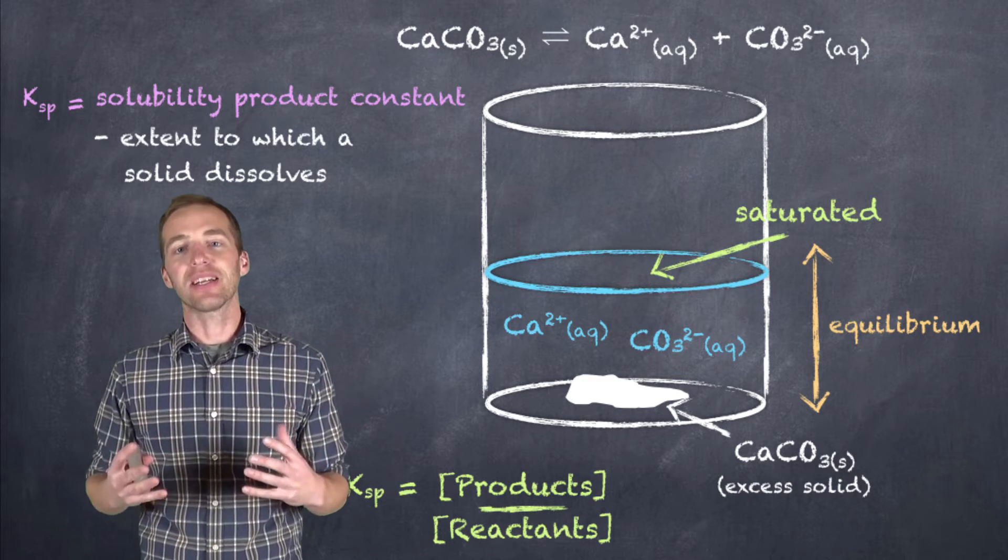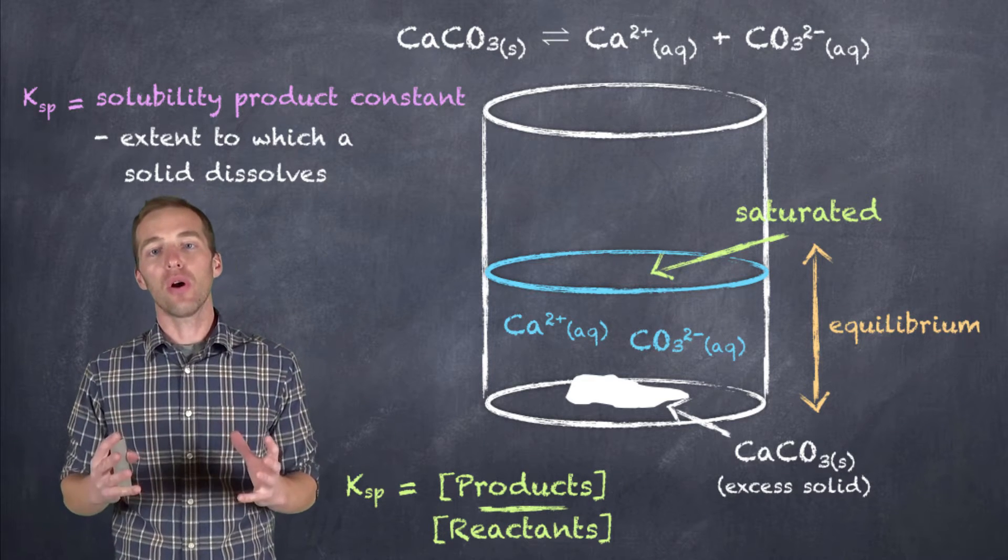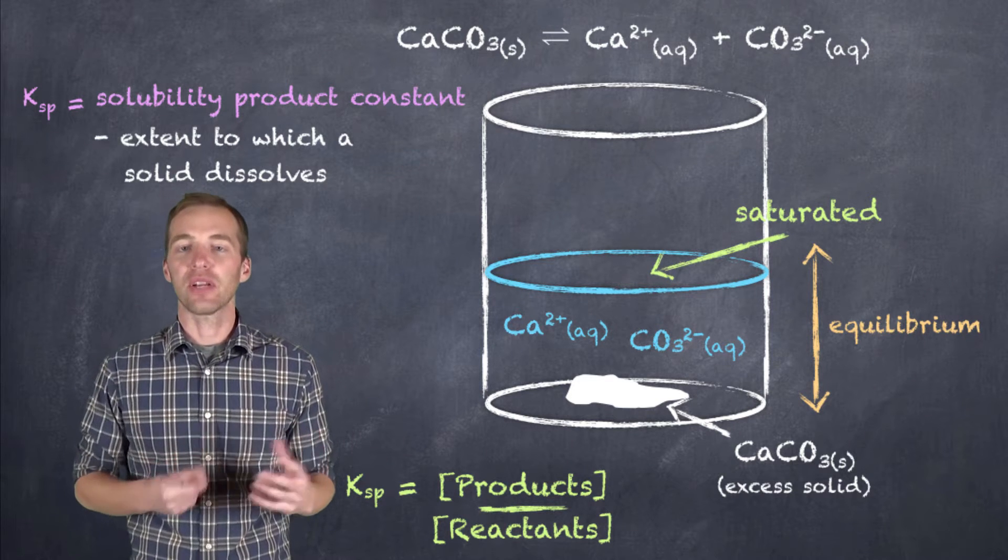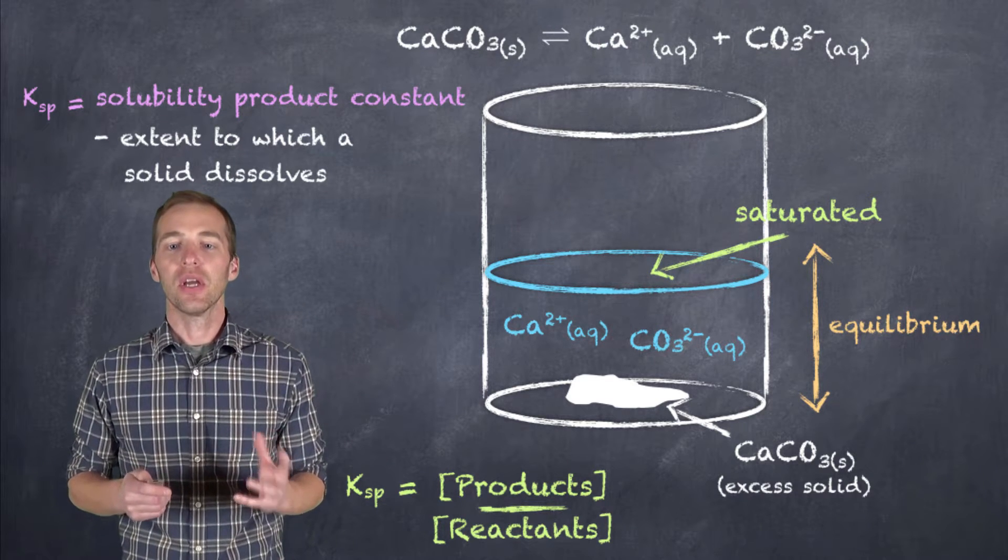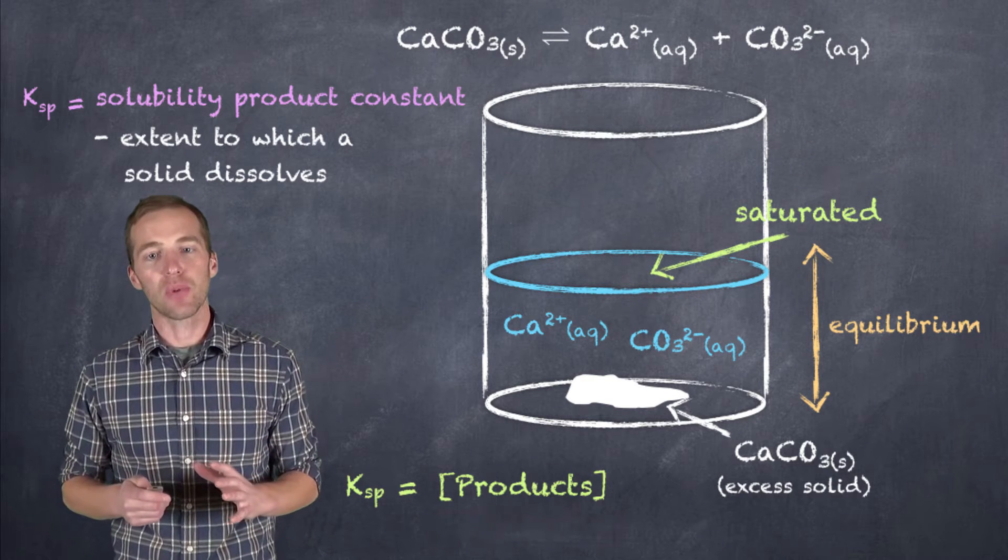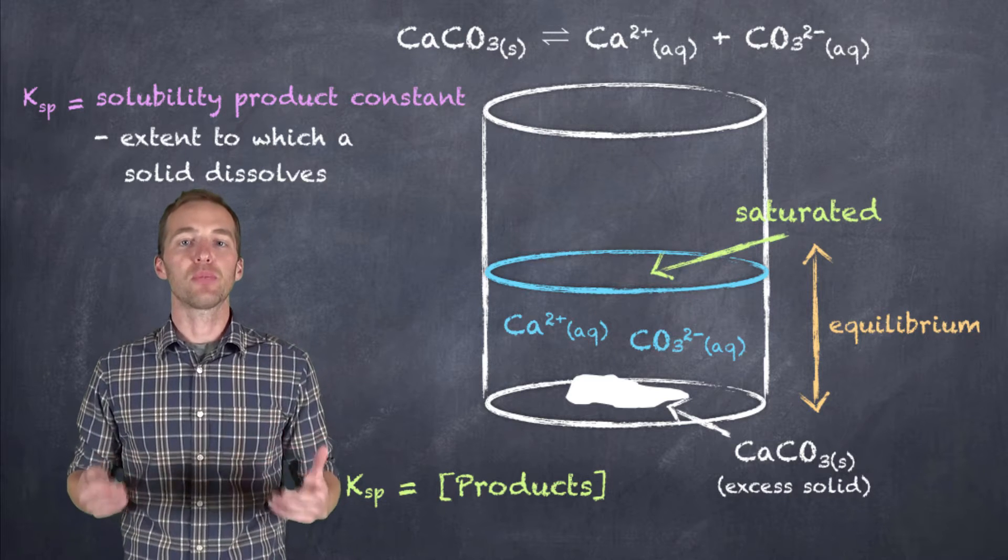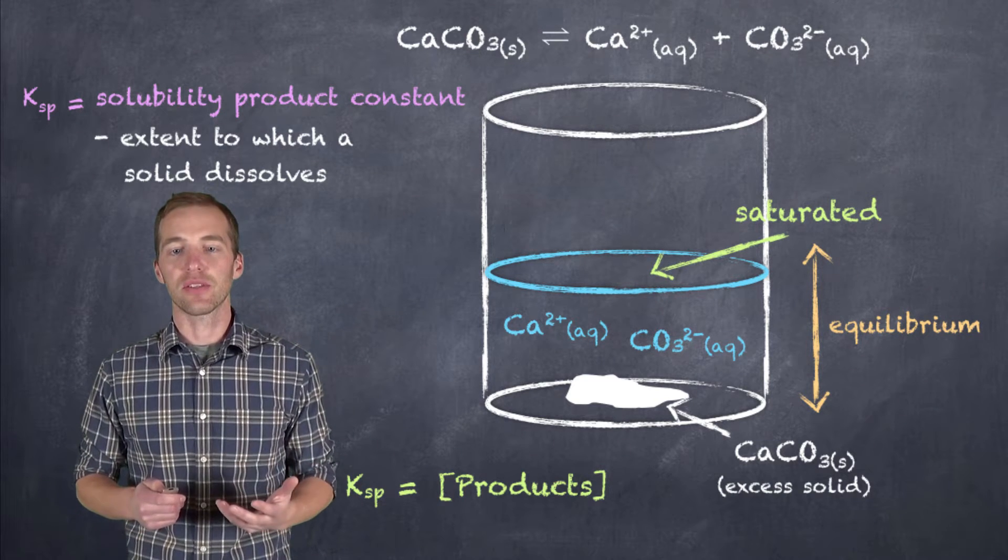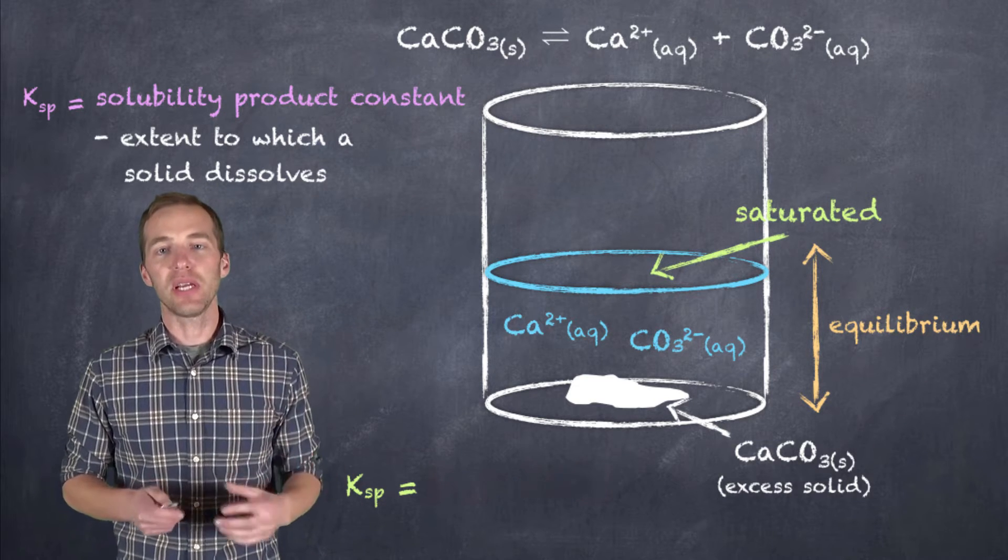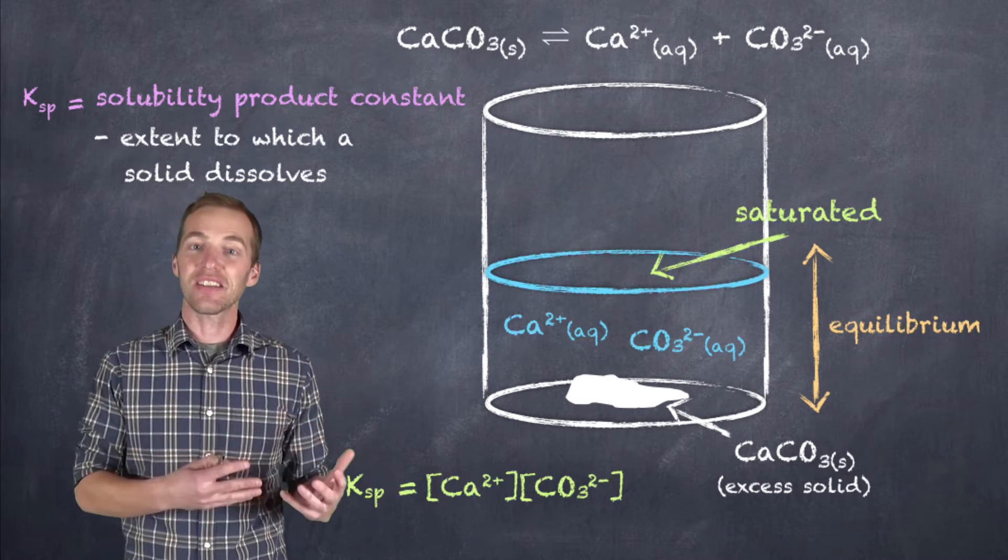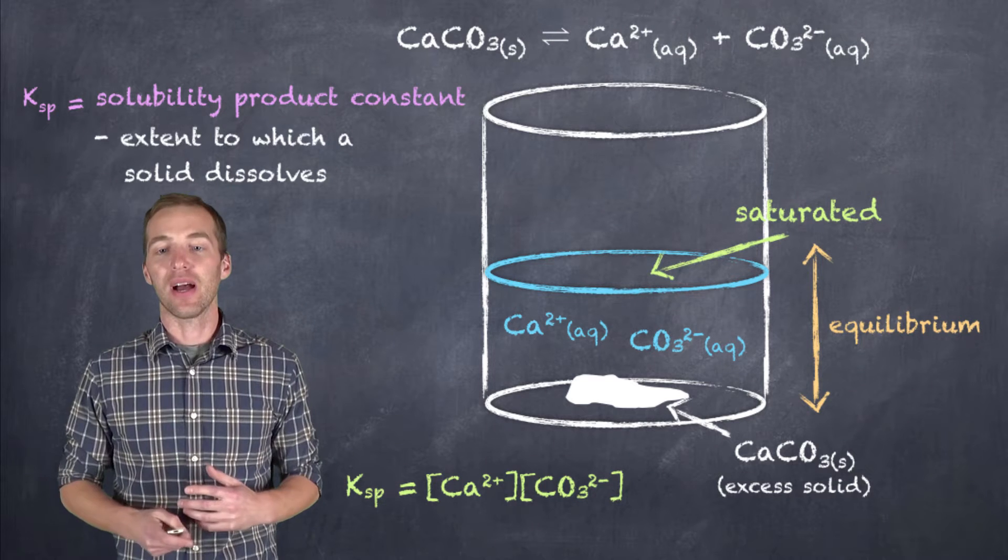So, effectively, their concentrations are fixed, or we can say they're factored into the equilibrium constant, so we don't include them in our expression. Really, we're just including the concentrations of the ions that are formed when this particular solid dissociates. So, in this case, our Ksp is going to be equal to the concentration of the ions involved, that is the calcium ions and the carbonate ions.